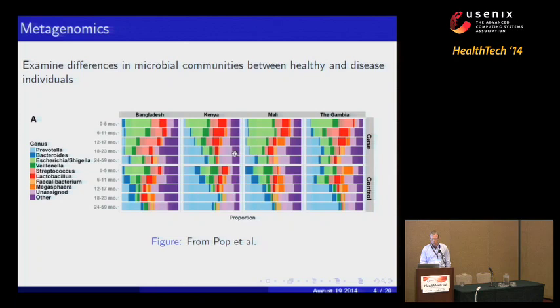Similar to how genomics studies the genomes of individuals, metagenomics studies microbiomes. The main question is examining differences in microbial communities between healthy and diseased individuals. This figure is from a recent paper from the Childhood Diarrheal Disease Study. On the left are different bacteria seen at the genus level, and on the right you can see case and control groups — patients that exhibited childhood diarrheal disease and those that didn't. The dataset also accounted for time sequence and country of origin.